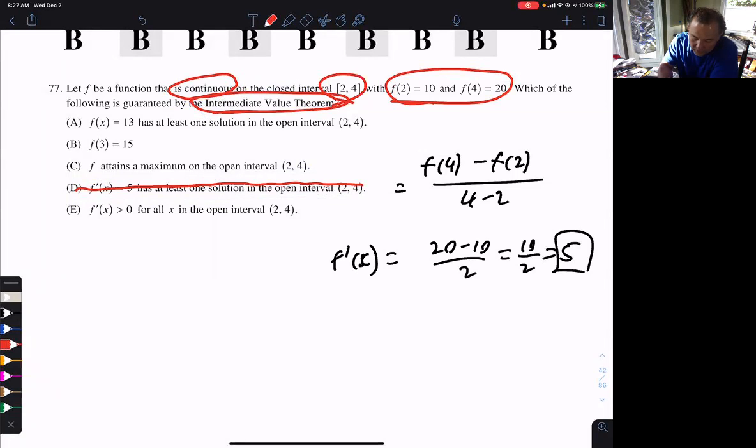Now, the question C, F has a maximum value. So we know that any continuous function on a closed interval has a maximum and a minimum value. That's true. So C is true. But that's the extreme value theorem, not the intermediate value theorem. Therefore, that's not true.